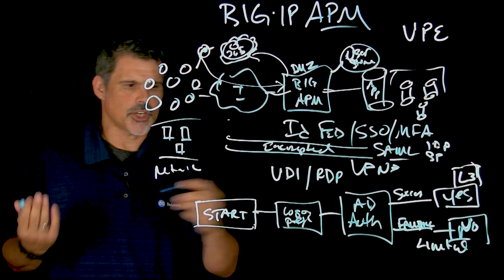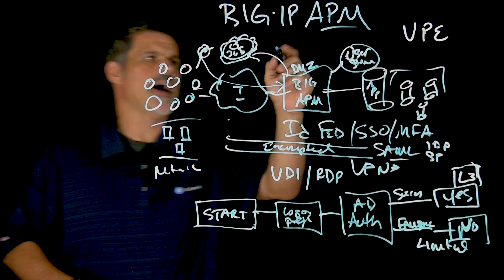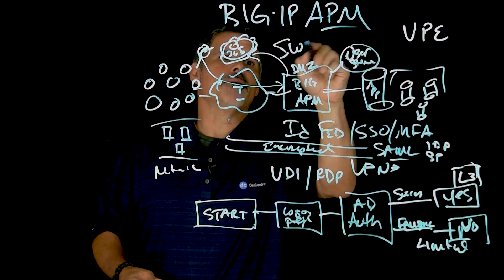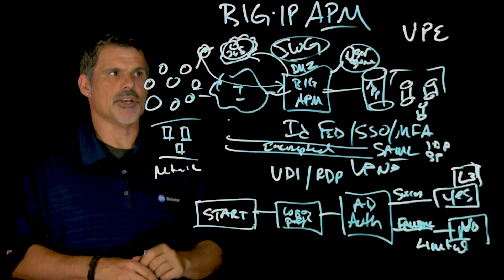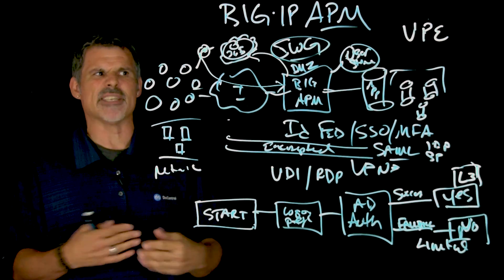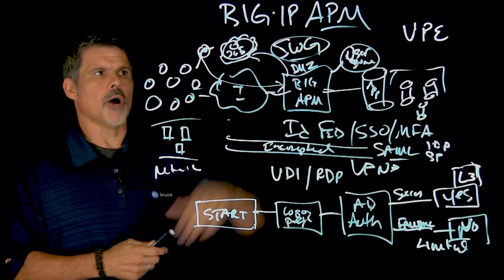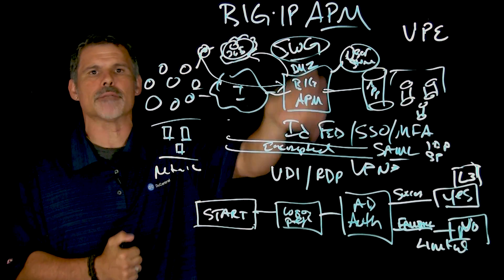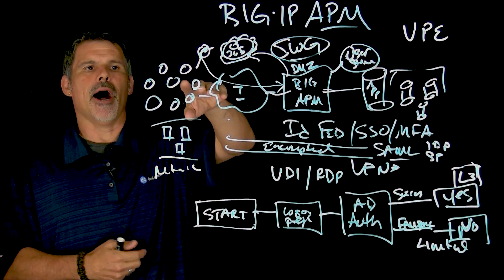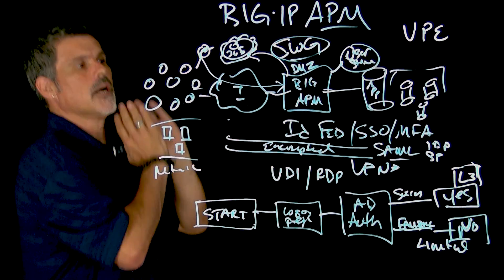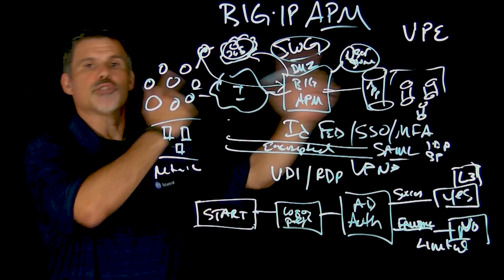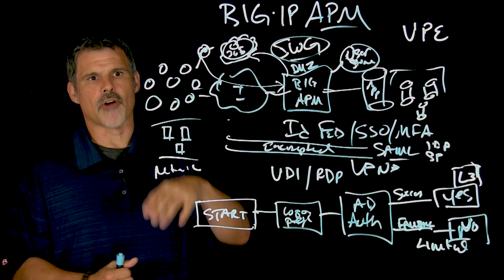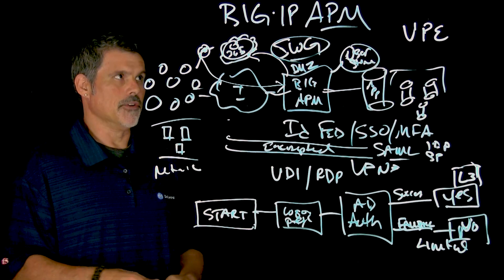You might have heard of Secure Web Gateway. Where can I put that? SWG. So Secure Web Gateway is kind of think about that like sort of as a forward proxy. And so being able to filter URLs and web-based malware where with internal users on the network going out to internet resources from the inside of your network.